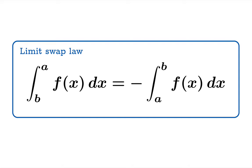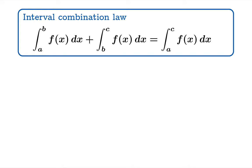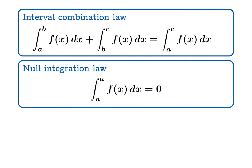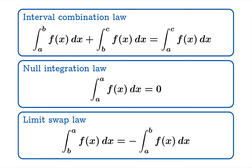So once again we will make this a definition — we'll call it the limit swap law. It says that you can always switch the limits of integration at the cost of introducing a minus sign. We make this definition so that the interval combination law continues to hold in a more general setting than just having your limits run from left to right. So we started with the interval combination law, which seems intuitive when A is less than B is less than C, and from this we concluded that we had better define the integral from A to A to be zero, and the integral from B to A to be the opposite of the integral from A to B.